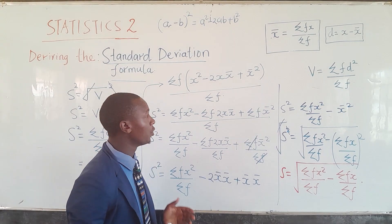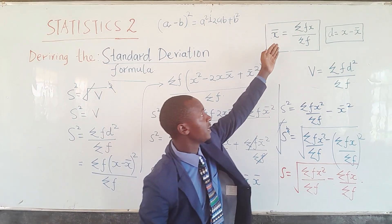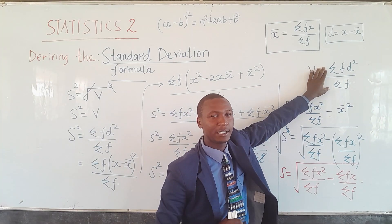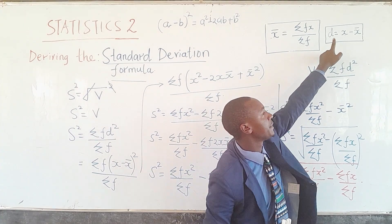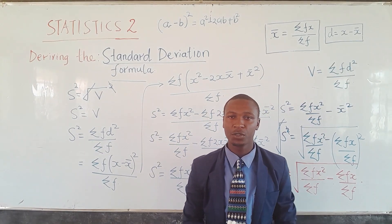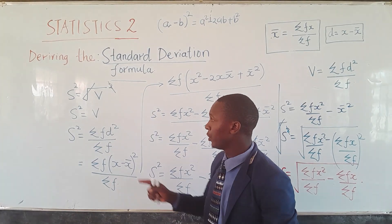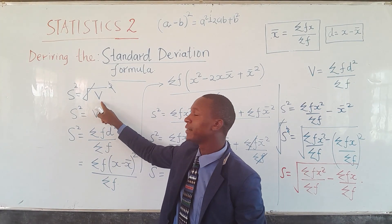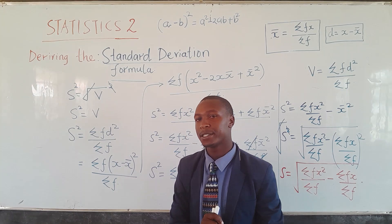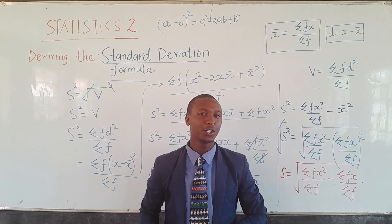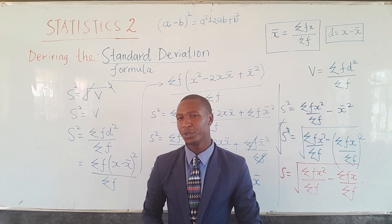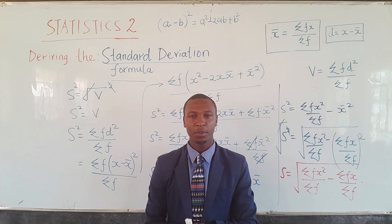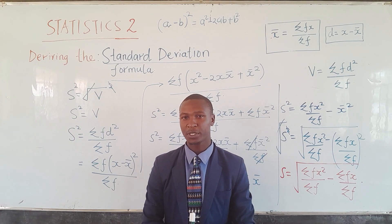It is easy to go through these steps provided we know: the mean is given by Σfx/Σf, the basic variance formula is Σfd²/Σf, d represents the deviation from the mean, and the standard deviation is the square root of the variance. This is the first formula for finding standard deviation, and in subsequent videos we will derive a few more. Please remember to share this video, comment, and subscribe.